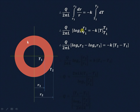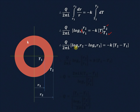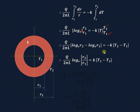Substituting the upper limit R2 and lower limit R1 into log R, we get log R2 minus log R1. Substituting the upper limit T2 and lower limit T1 for T. Since log M minus log N equals log M upon N, this becomes log R2 by R1. With the negative sign, instead of T2 minus T1, it becomes T1 minus T2.